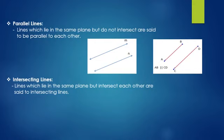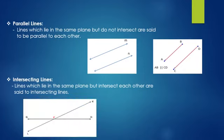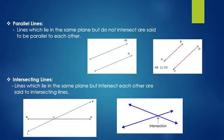Next, intersecting lines. Lines which lie in the same plane but intersect each other are said to be intersecting lines. In the figure given below, line LK and line GH are intersecting at point P. Point P is their point of intersection.